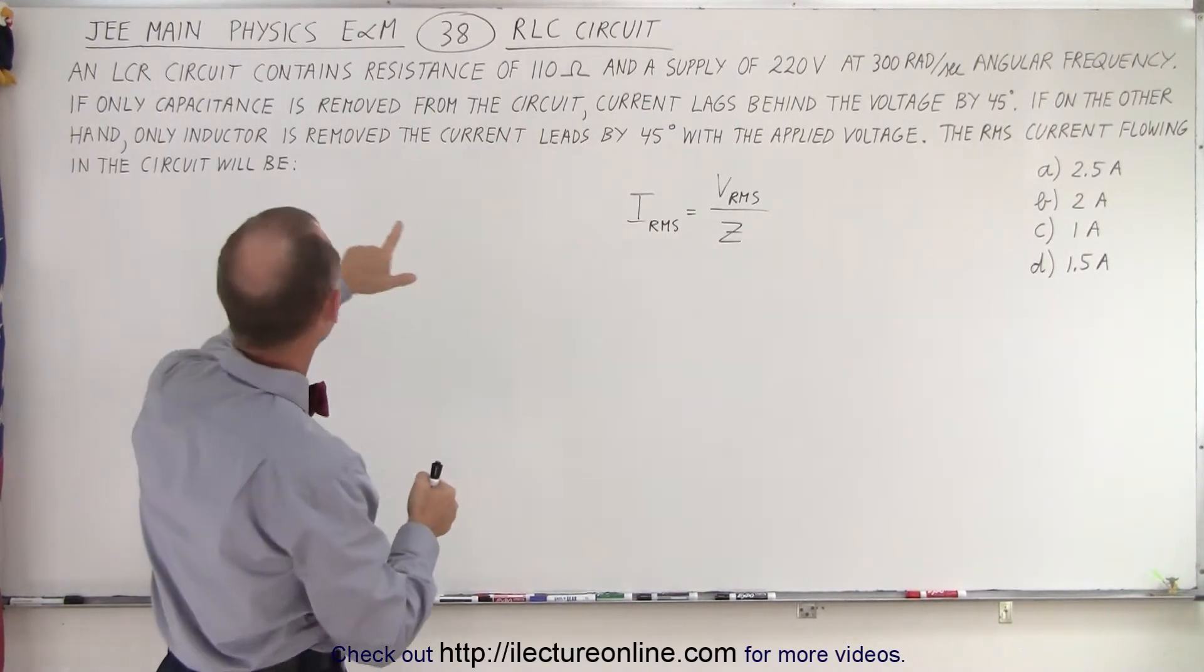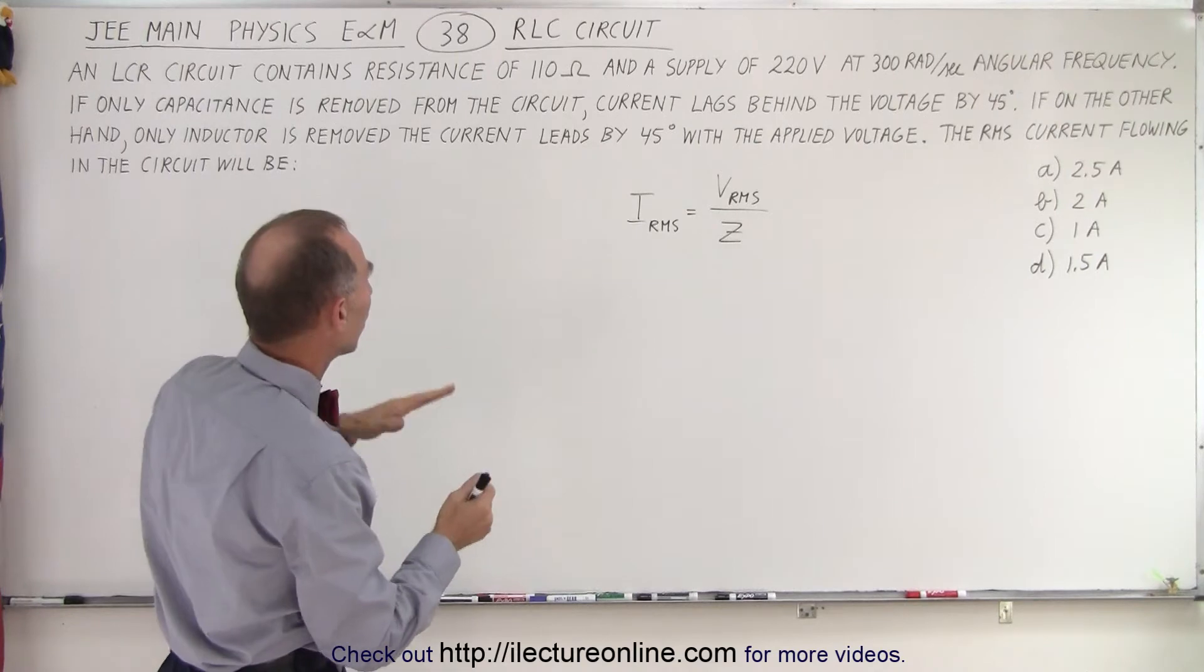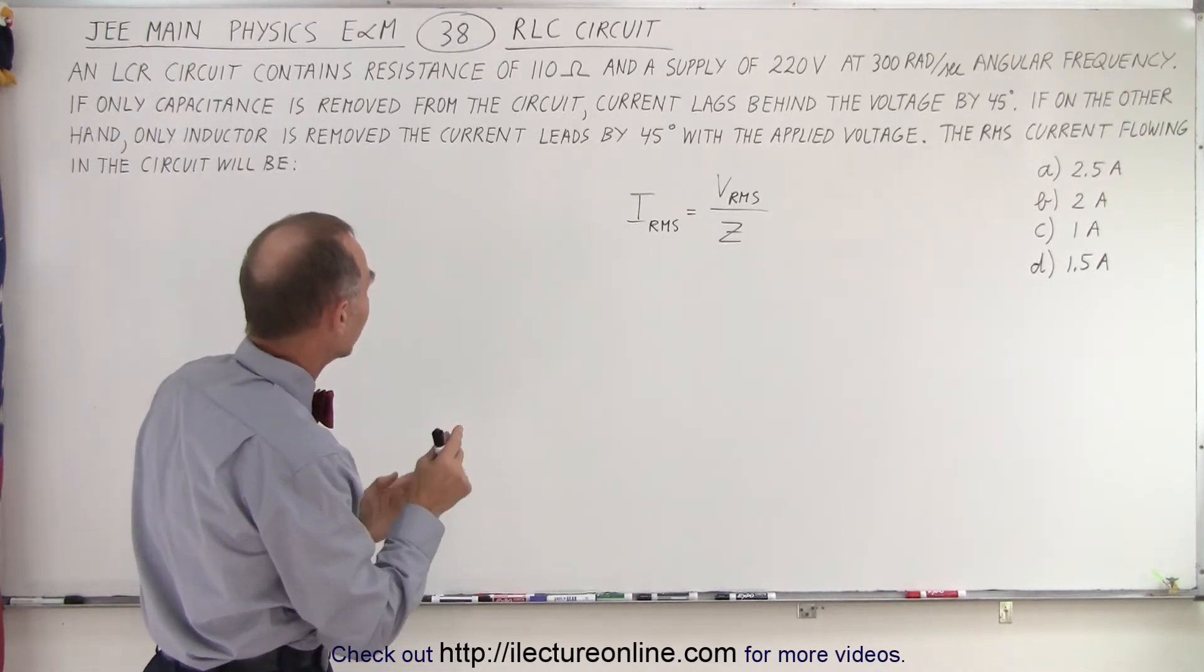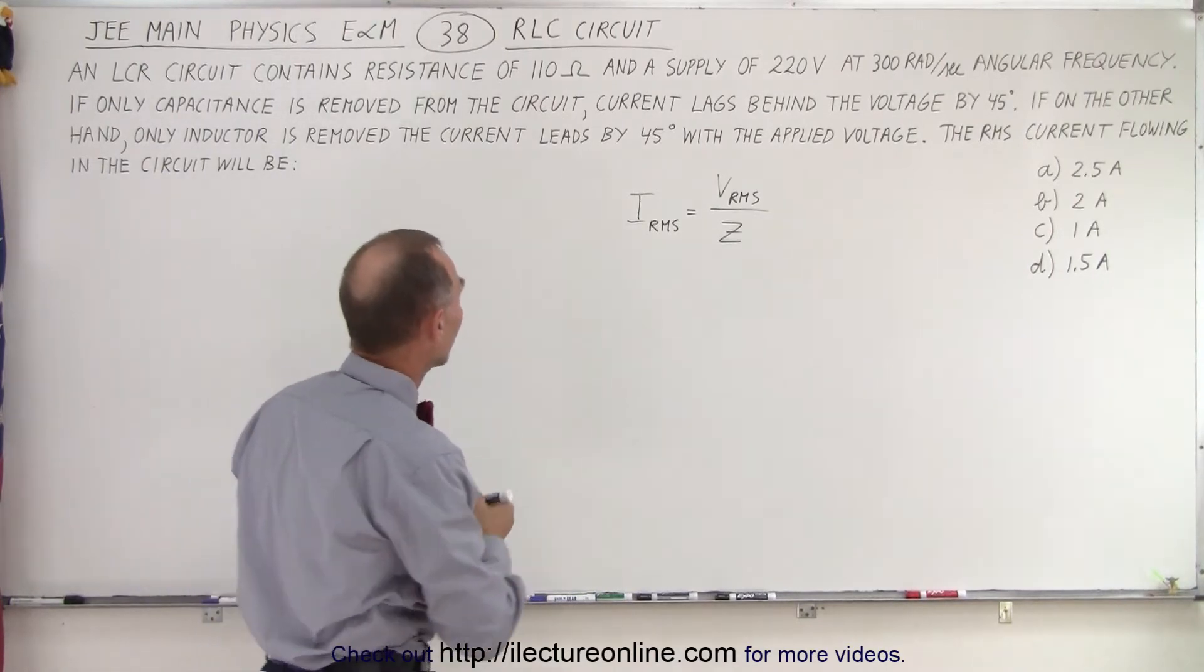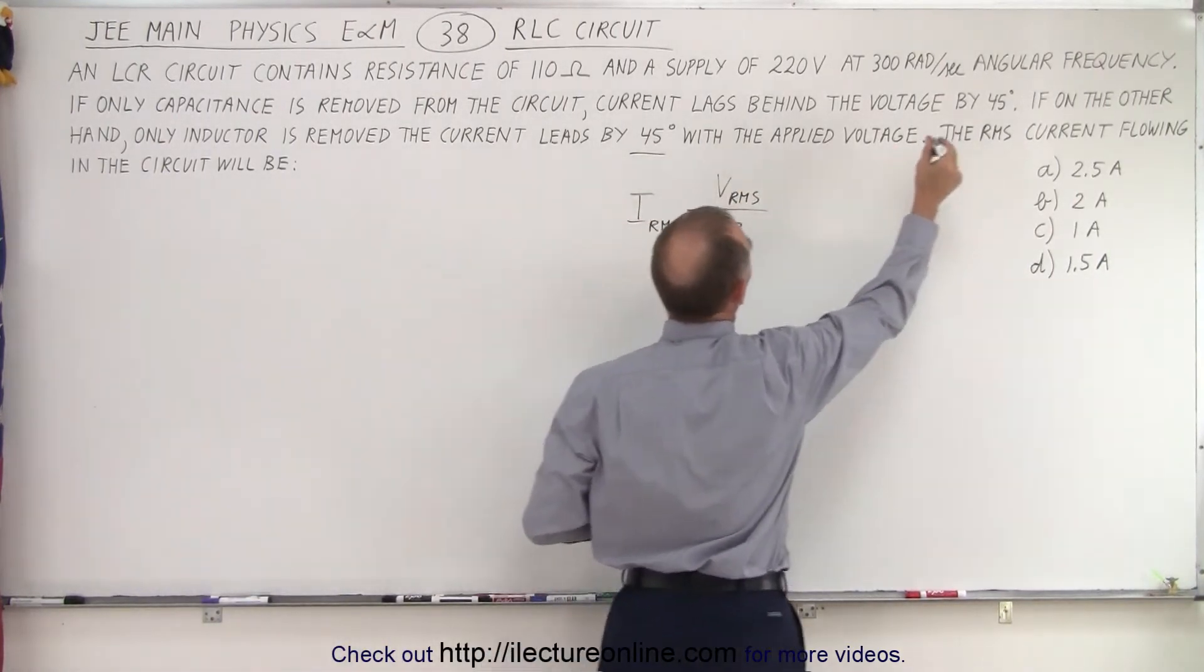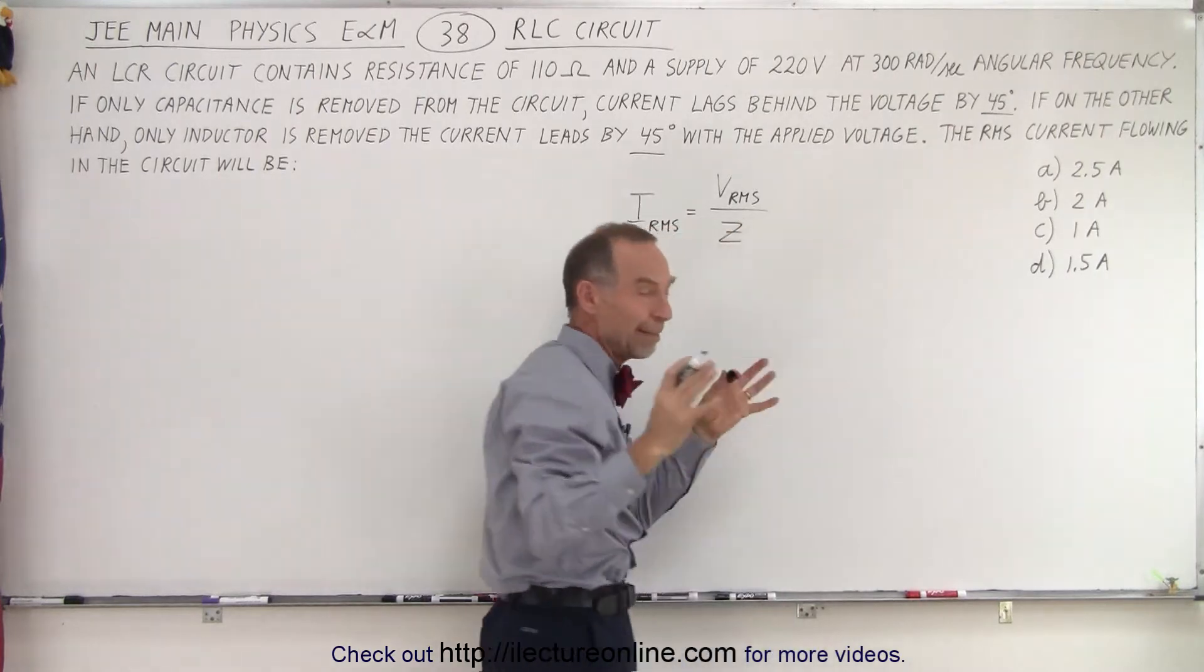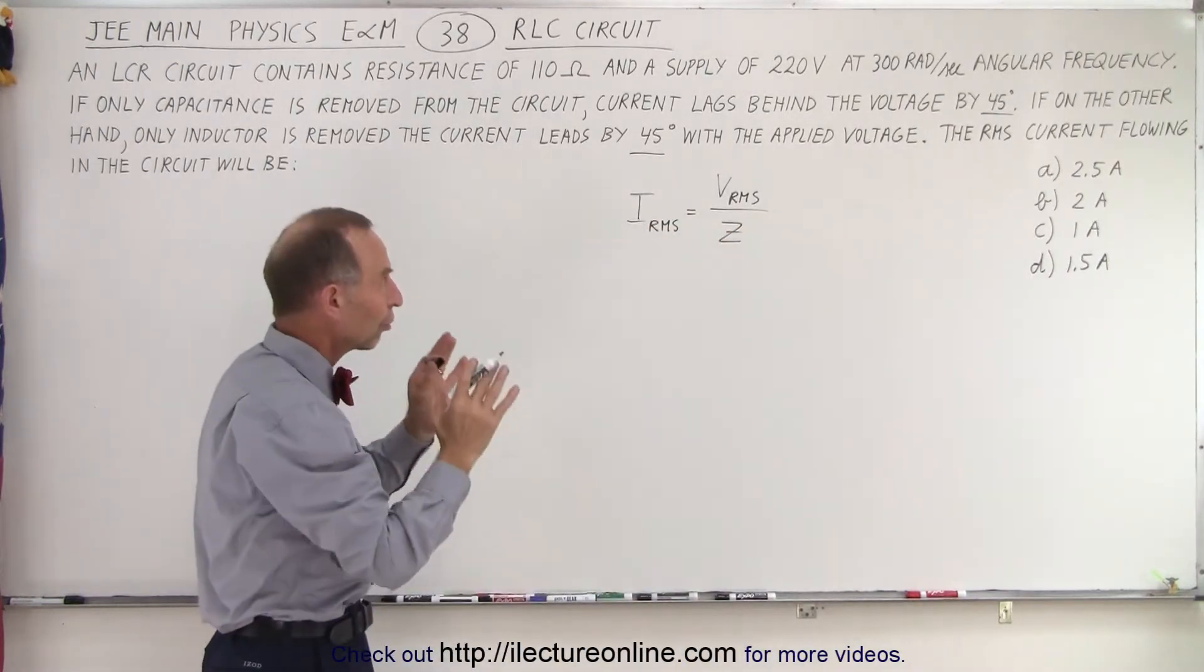let's say here. If the capacitor is removed, the current lags behind the voltage by 45 degrees. And if the inductor is removed, the current leads by 45 degrees. So we can see that this is the same, just obviously the same magnitude, but in opposite directions. So from that,